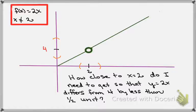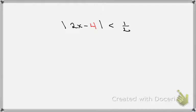Let's look at our specific example again. We're using x equals 2 and the function f of x equals 2x everywhere except x equals 2. I want to assure myself that I can find some range around x equals 2 so that I'm within a half a unit of the limit point 4. That means I want the absolute value of 2x minus 4 to be less than one-half, because this describes that distance.